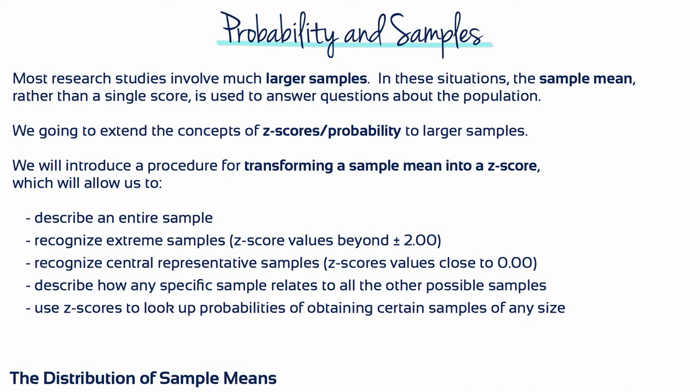A researcher would then be able to calculate a z-score that describes an entire sample. As always, a z-score value near zero indicates a central representative sample, while a z-value beyond plus or minus 2 indicates an extreme sample. Thus, it's possible to describe how any specific sample is related to all the other possible samples.